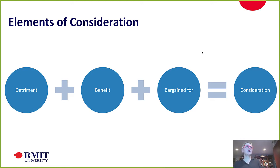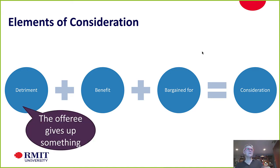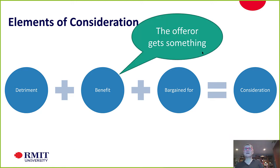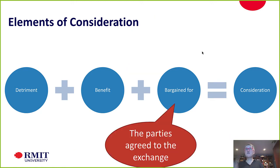At risk of vastly oversimplifying: in order to get to consideration, we need the benefit-detriment. The offeror gives something up, or the offeror gets something that is agreed to as part of the exchange, and that gives us consideration.